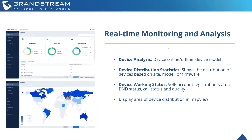For device working status, you'll be able to see your VoIP account registration status, your DND statuses, call status, and quality. This can display an area of device distributions in a map view as well. So if you tend to deploy more regionally across several locations, you'd be able to see up and down statuses based on a global network as well.